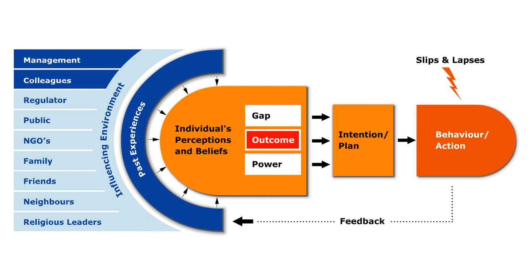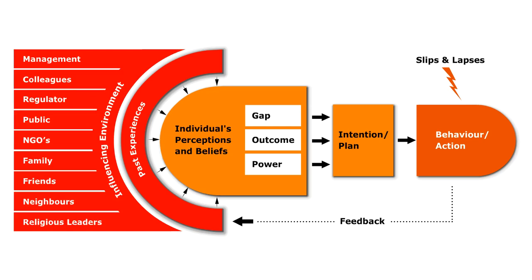Outcome: Why did they think there was a good reason to do it that way? If it had been successful, would there have been a benefit for them, their colleagues, or the company? And power: Why did they feel able to do it? We know their past experiences led to their beliefs about what they should do. So we should ask what the role of others was in the influencing environment.